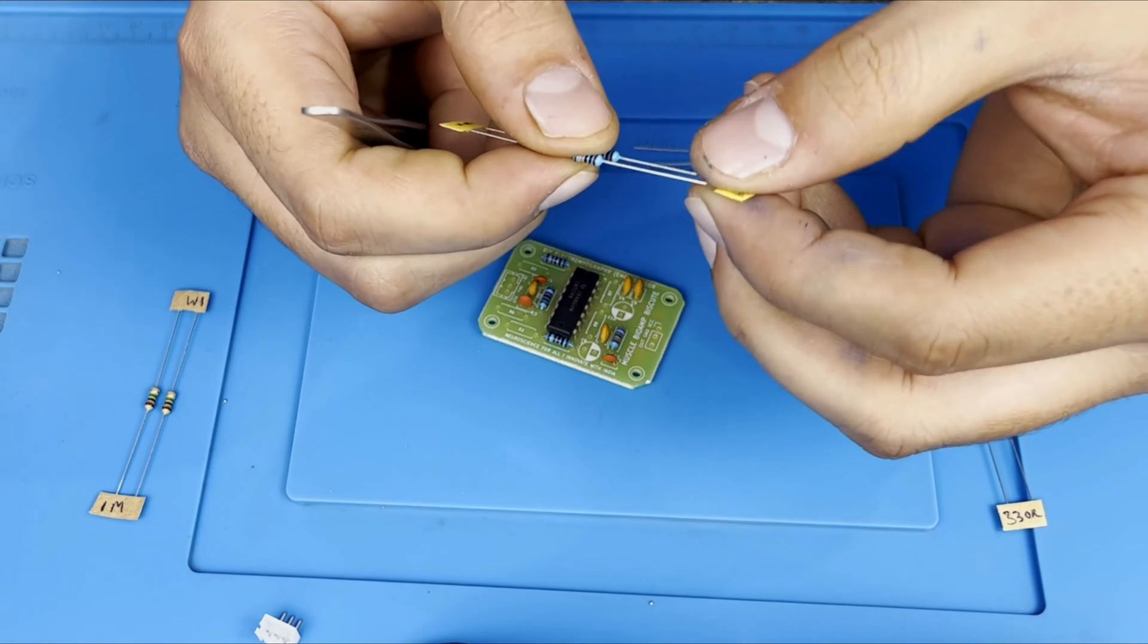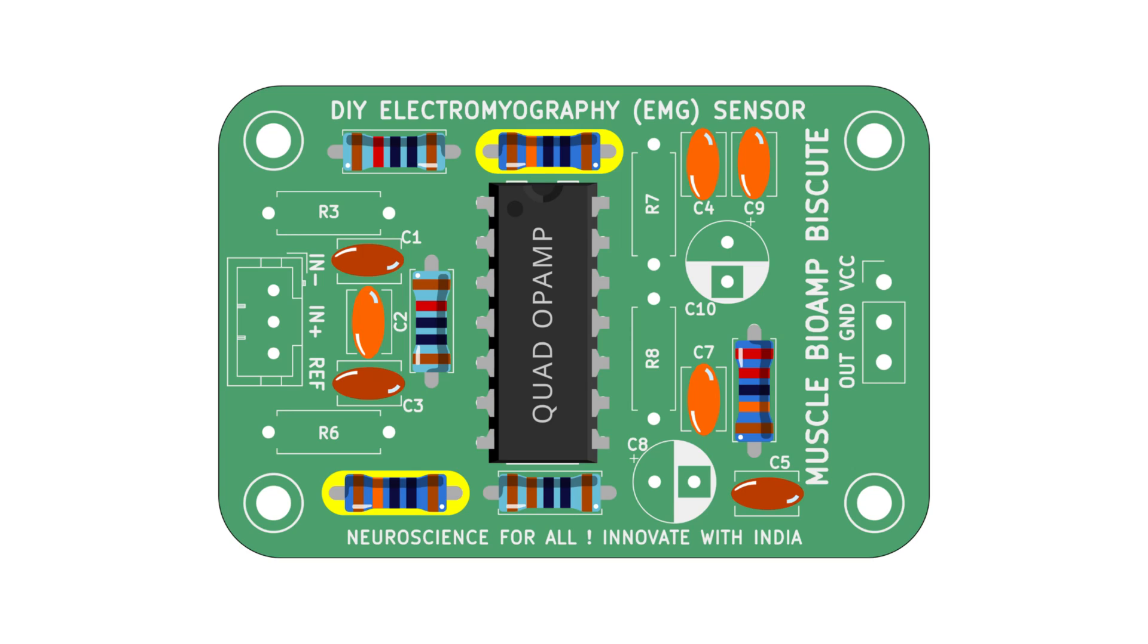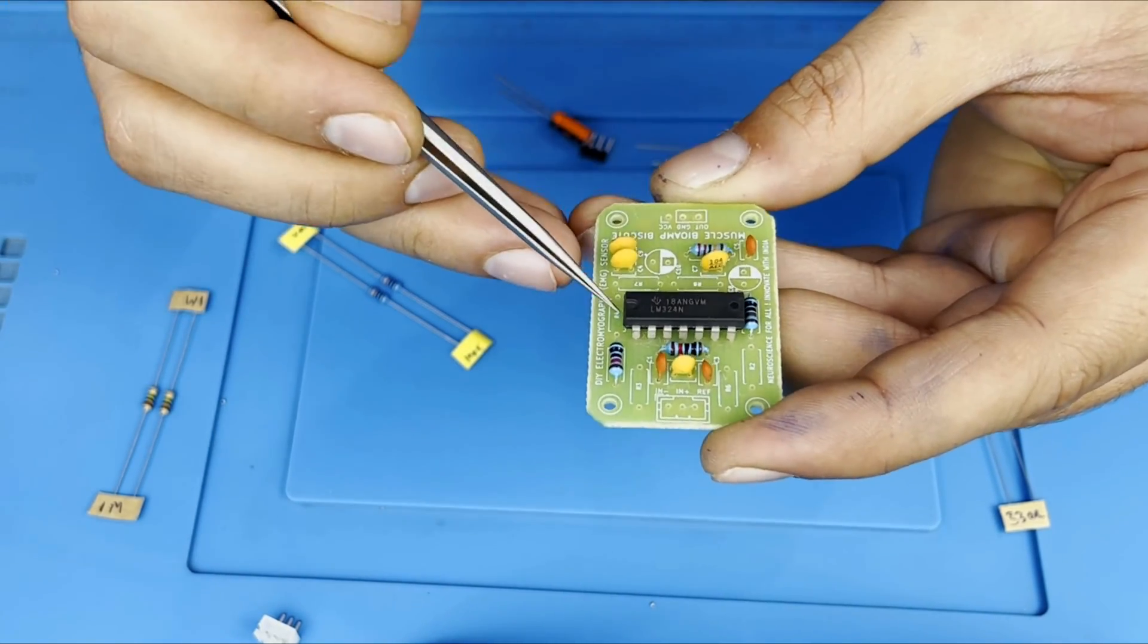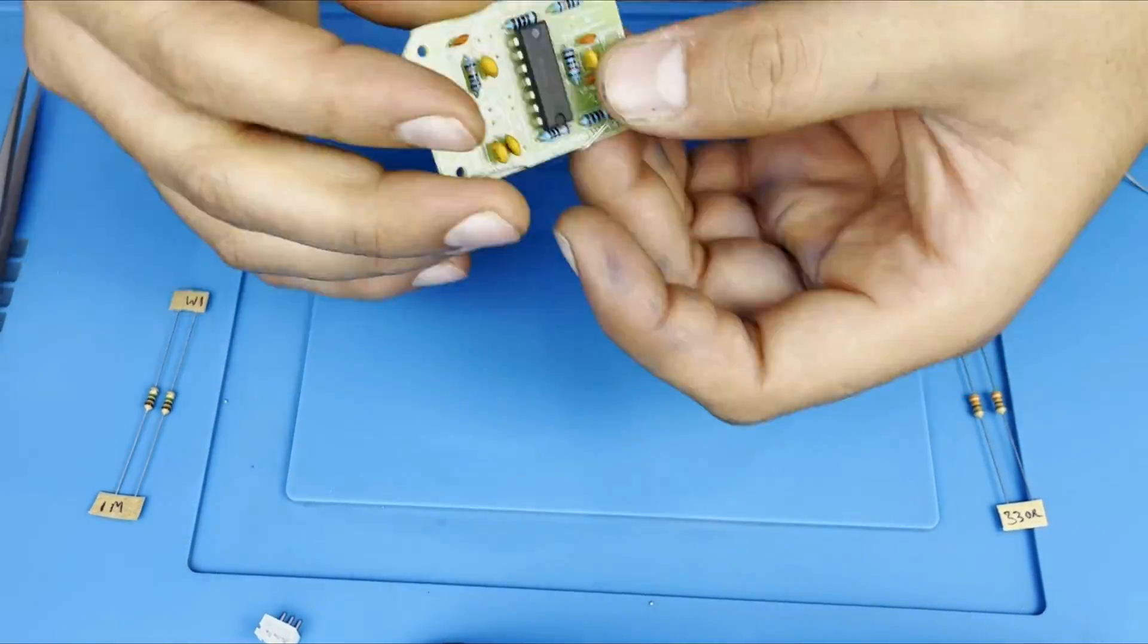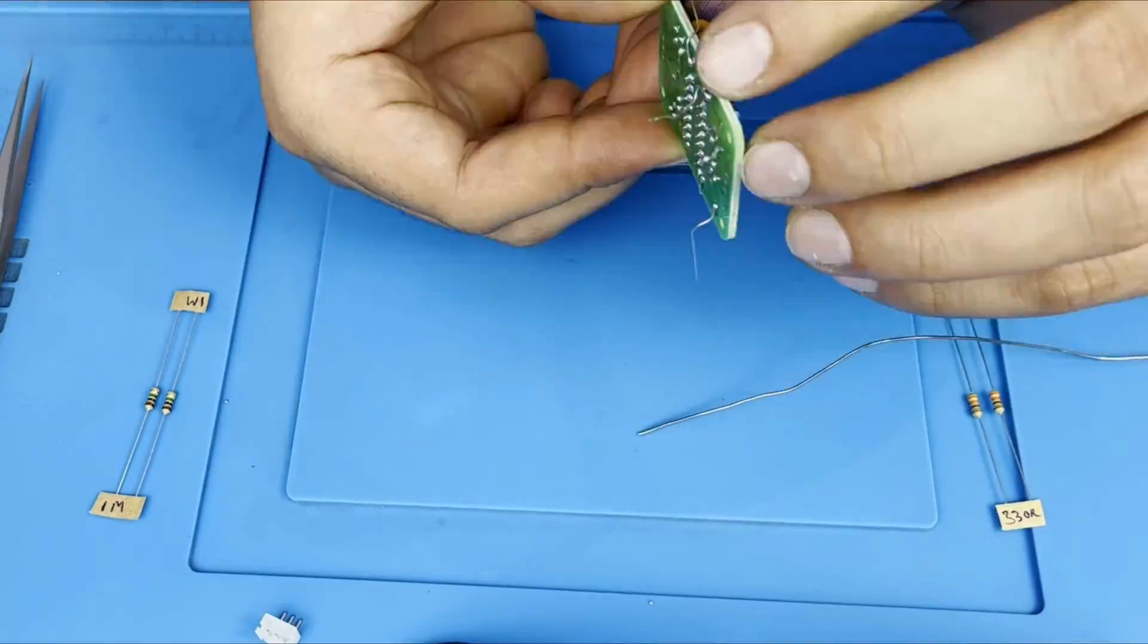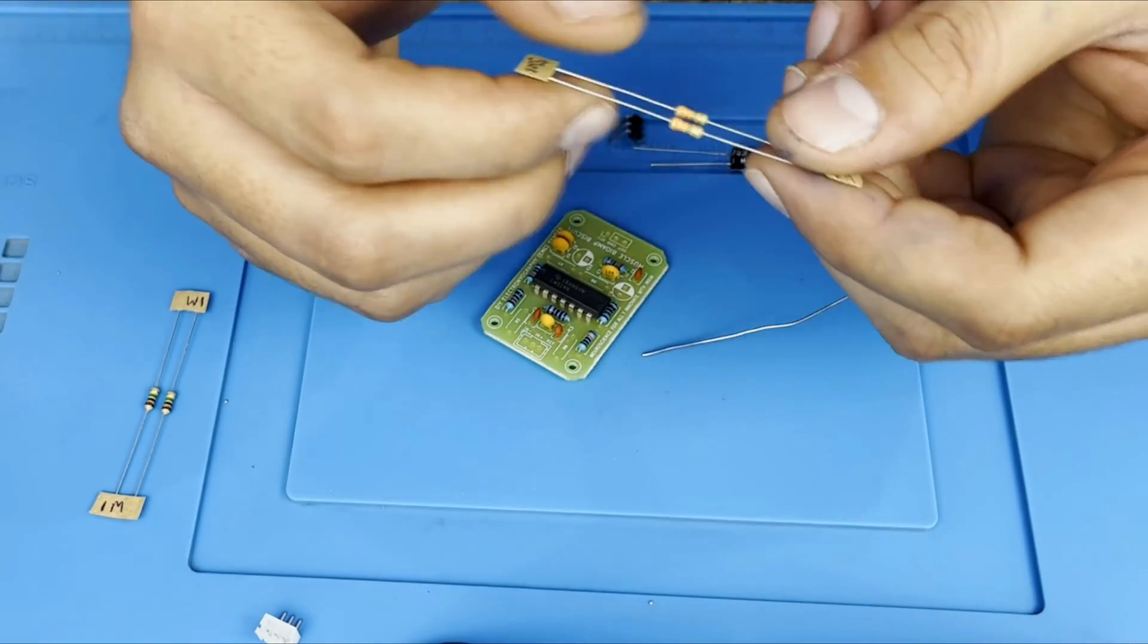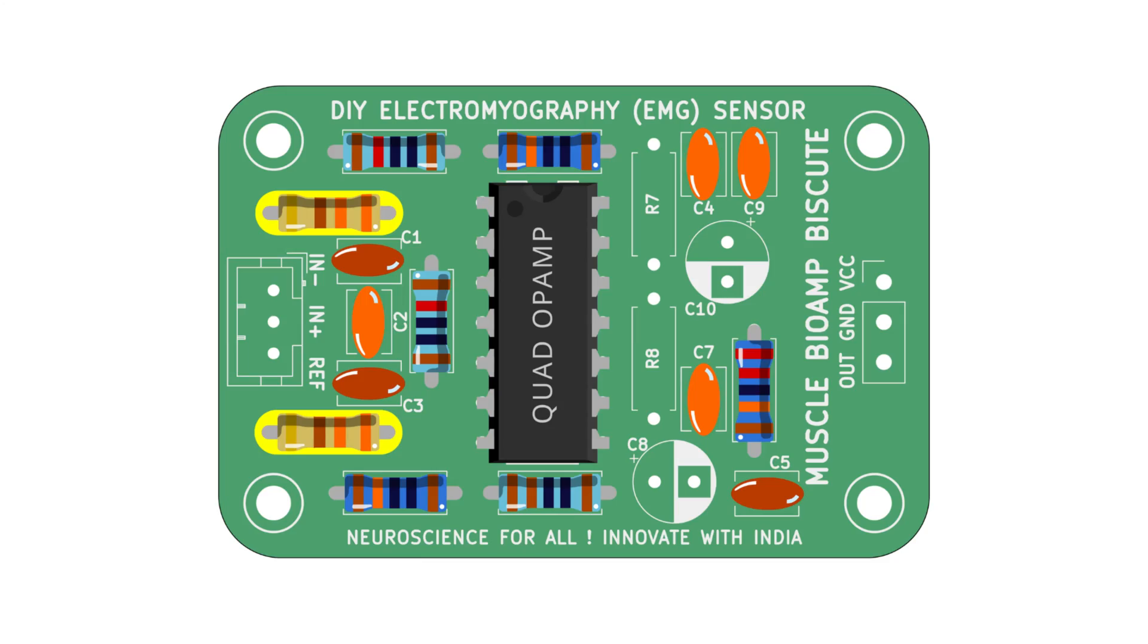Now we have the 100K resistor over here. It will be inserted in the R2 and R4 location. By this diagram we can see in the reference R2, R4. Now we have the 330R, it will be located at R3 and R6 the same as shown in the diagram here.